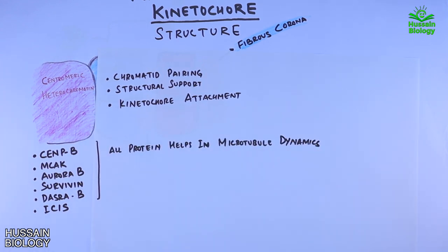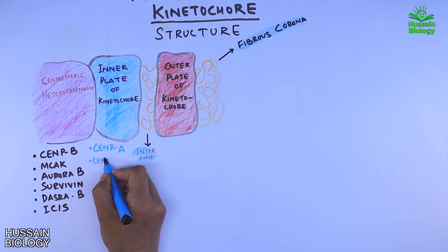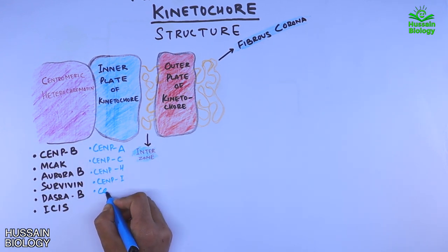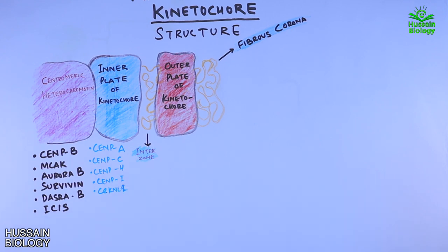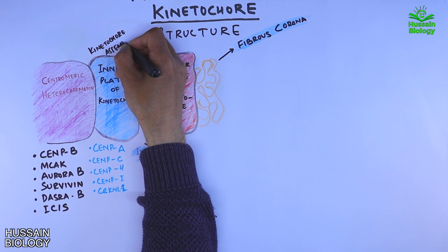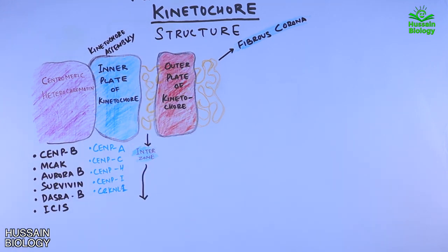The first element of the kinetochore is the inner plate. It contains proteins such as CENP-A, CENP-C, CENP-H, CENP-I, and CKNL1. These proteins help in kinetochore assembly, where most of the proteins mediate the recruitment of different proteins towards the kinetochore.